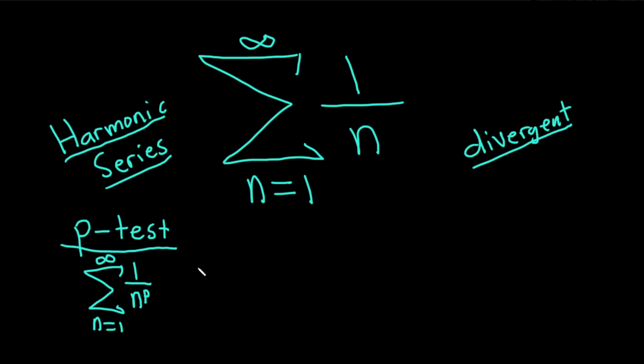The p-test is going to say that this converges if p is bigger than 1, and it diverges if p is less than or equal to 1.